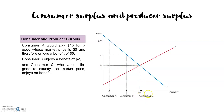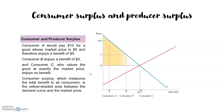Then we have Consumer C, who values the good exactly at the same price as it has in the market, so Consumer C has no surplus, no benefit. The total surplus for all consumers will be given by this triangle, because we sum all the reservation prices that the demand gives us for different consumers. This area — above the market price and below the demand — is the consumer surplus, meaning the surplus for the whole quantity of consumers in the market.